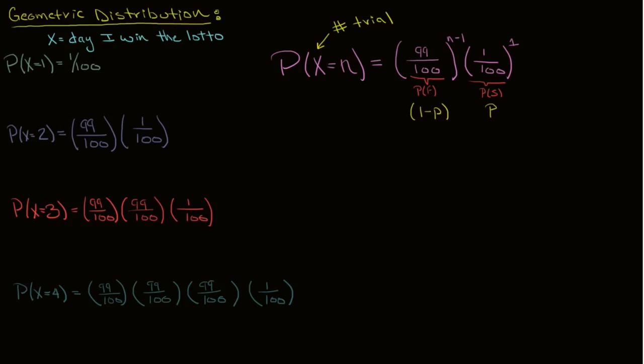And that's the biggest difference between the geometric distribution and the binomial distribution: in the geometric distribution, you stop playing after you have your first success. So let's just rewrite this using general variables. The probability that x equals n equals 1 minus p,